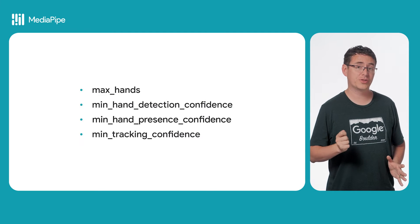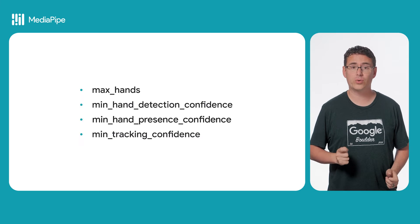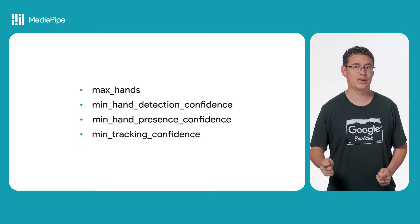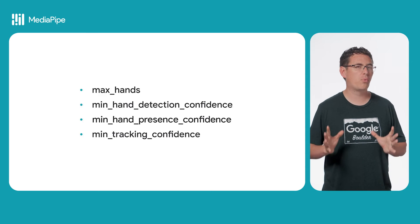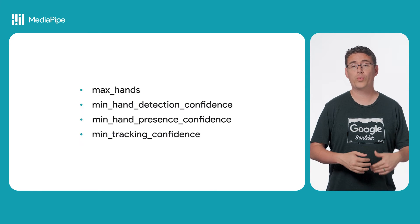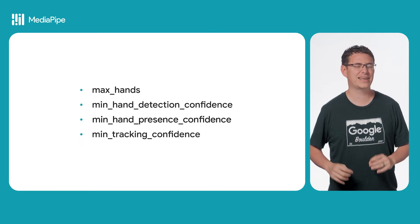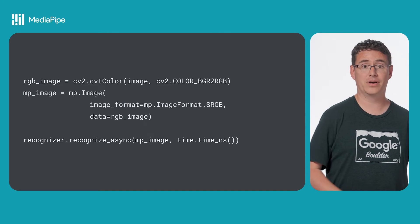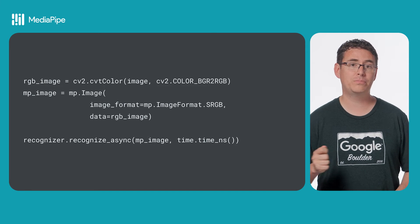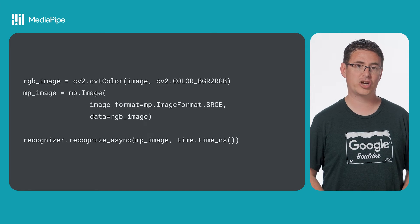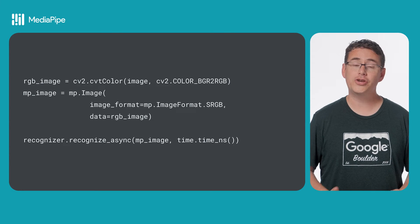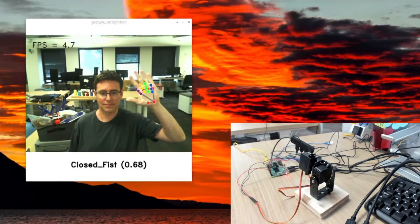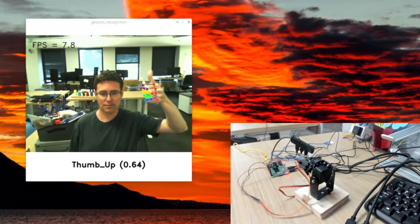In addition to the values that you can include with the options object, you can also set the number of hands that you want to support recognition on, the minimum hand detection confidence that must be met before the second and third models are run in this pipeline, and the presence and tracking confidence score thresholds, which are two more values specifically meant for optimizing run times when the likelihood of a successful recognition isn't as high as you might like. From there, you can read in each camera frame. With your image formatted and converted to a MediaPipe image object, you can call the RecognizeAsync method to start performing inference. When that's done, it will return a results object to you in the callback that you can use to do whatever you're going to do in your application.